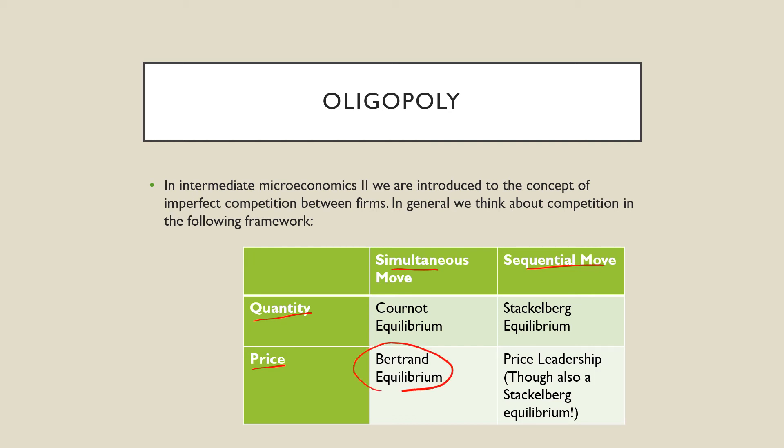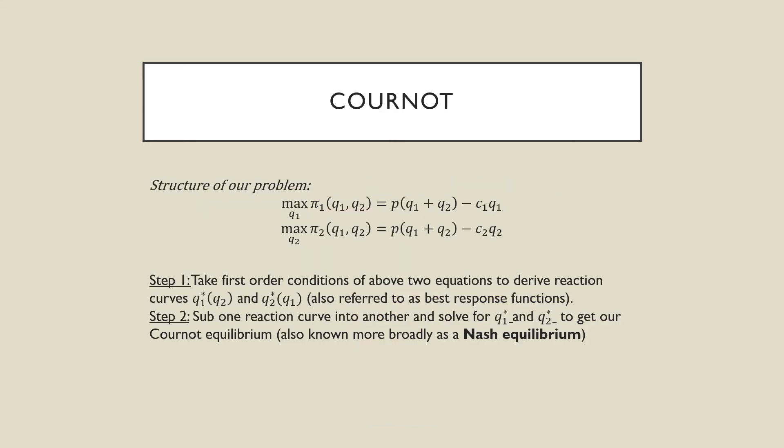For the most part, for Bertrand equilibrium and price leadership in this context, unless we're talking about differentiated products, it is largely ignored. Instead, we discuss mostly Cournot equilibrium and Stackelberg. For Cournot equilibrium, we need to first think about the structure of our problem. We have two firms — firm 1 is in control of the quantity it produces and firm 2 is in control of the quantity it produces. They could have the same or different cost structures, and they face the same inverse demand. Step 1 is to take the first order conditions and derive the reaction curves Q1 as a function of Q2 and Q2 as a function of Q1. Step 2, we substitute one reaction curve into the other to get Q1* and Q2*, our Cournot equilibrium — more broadly known as our Nash equilibrium.